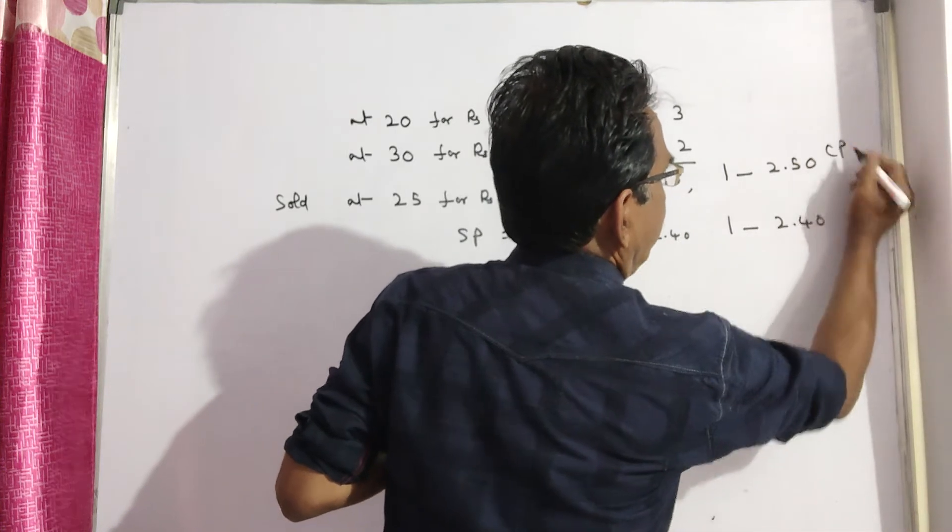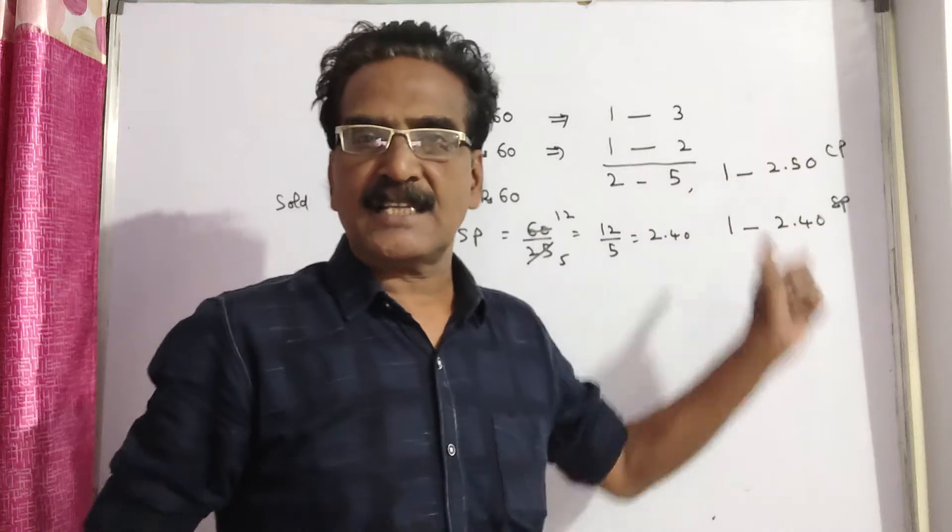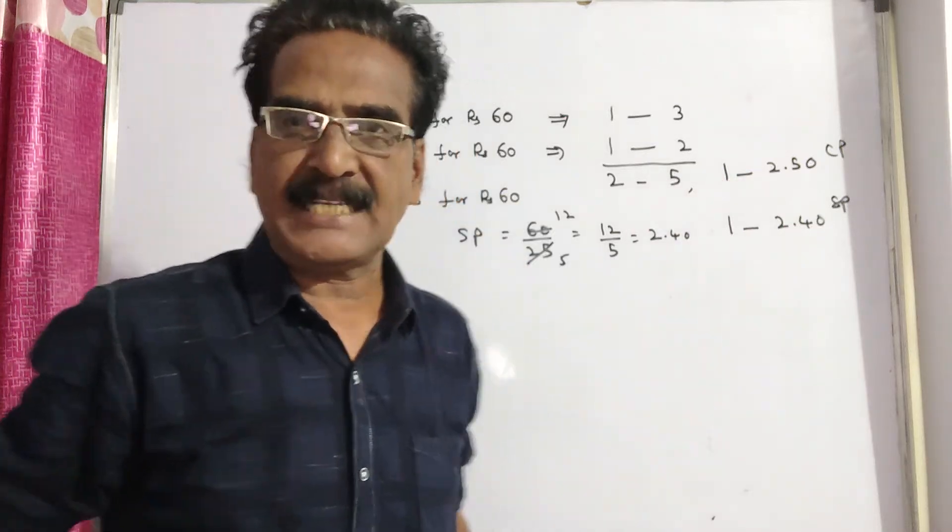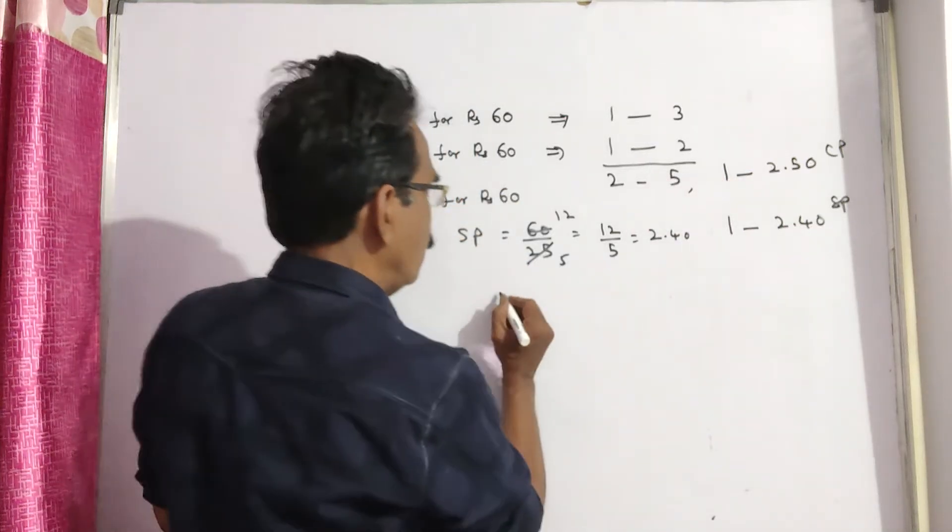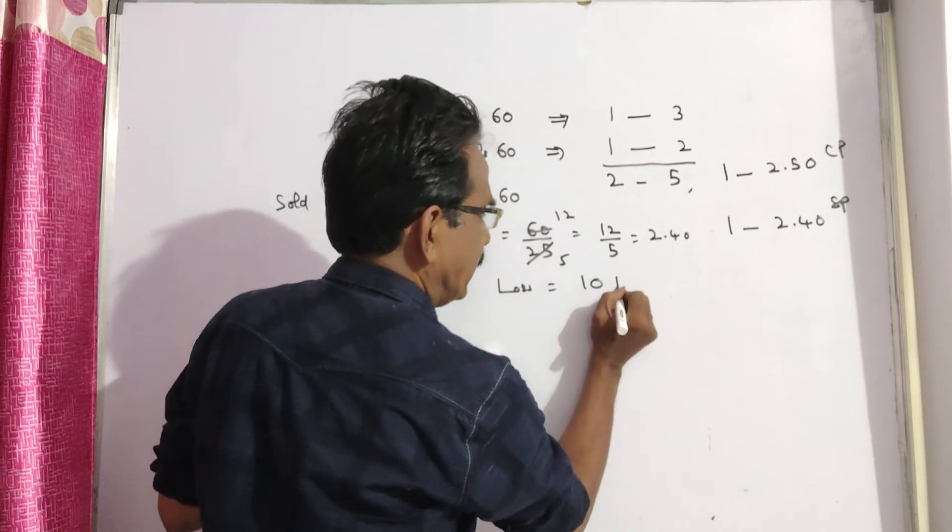This is the cost price of each orange, friends. This is the selling price of each orange. So in this transaction, he is getting a loss of 10 paise on each orange. Loss is equal to 10 paise.